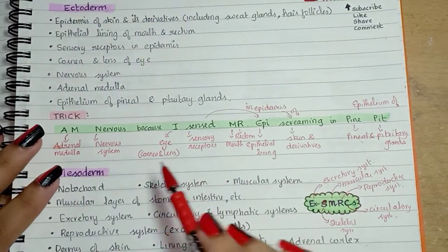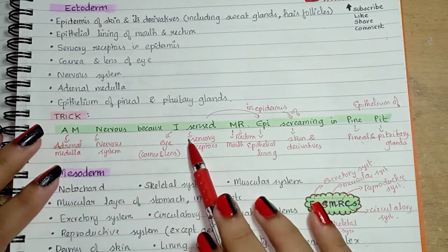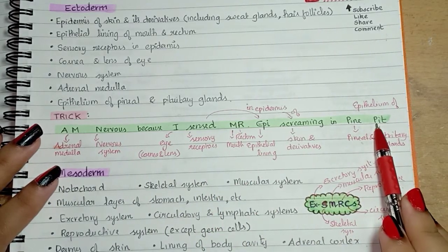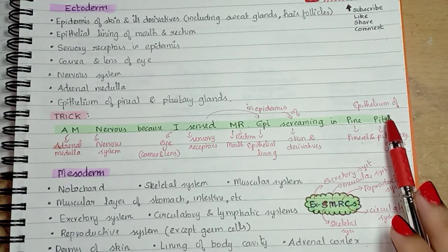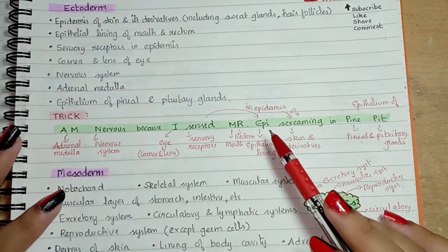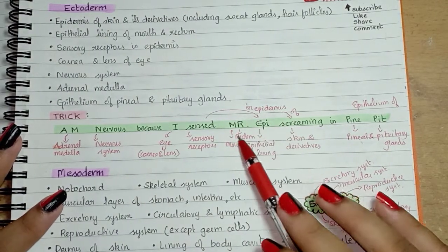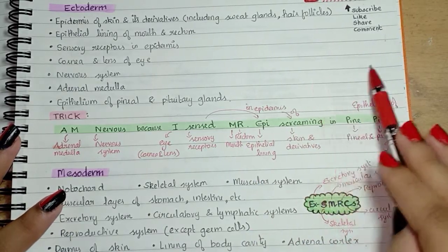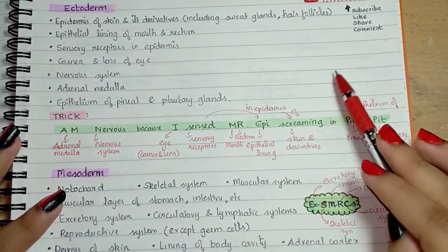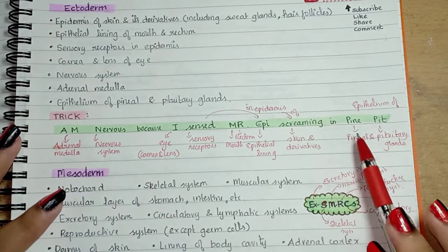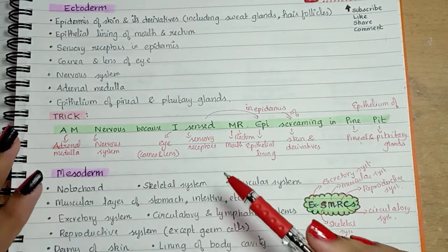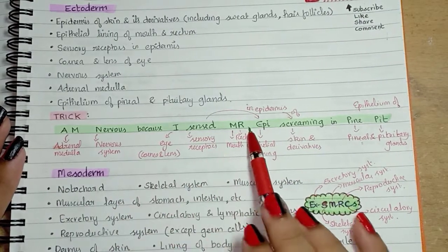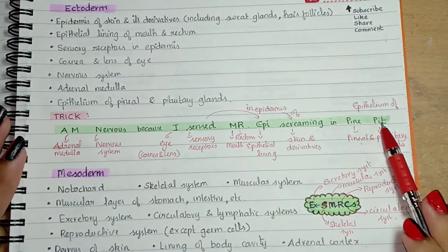The trick for ectoderm is: "I am nervous because I sensed Mr. Epi screaming in pine pit." So you are nervous — there is this man Mr. Epi who was screaming in a pine forest pit, and that makes you nervous. I am nervous because I sensed Mr. Epi screaming in pine pit.